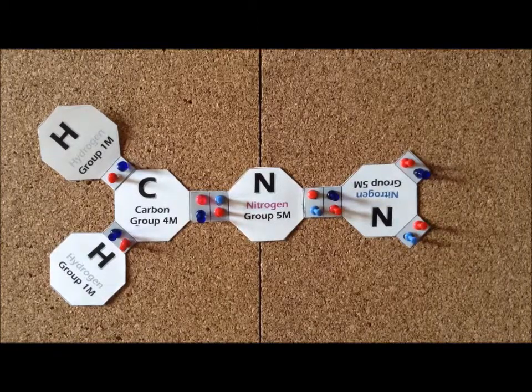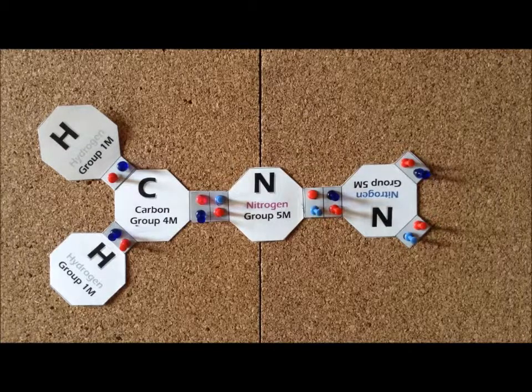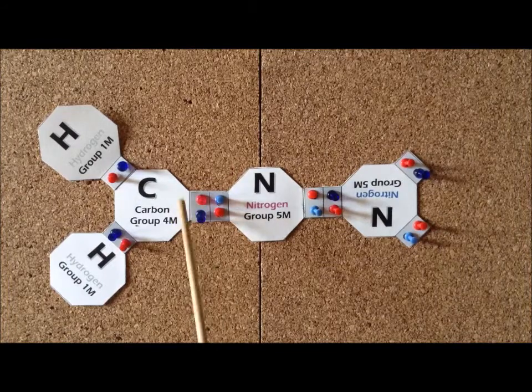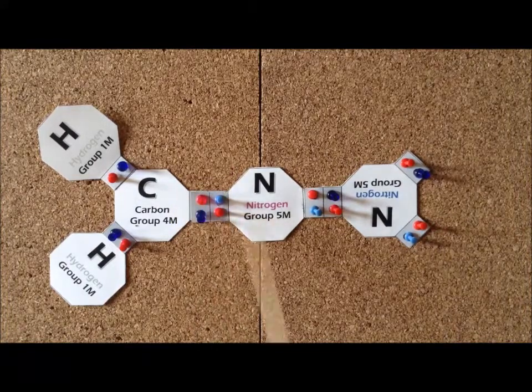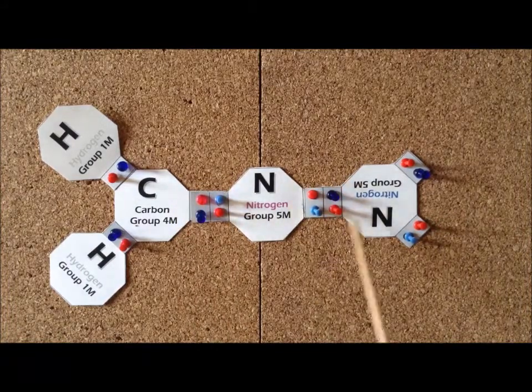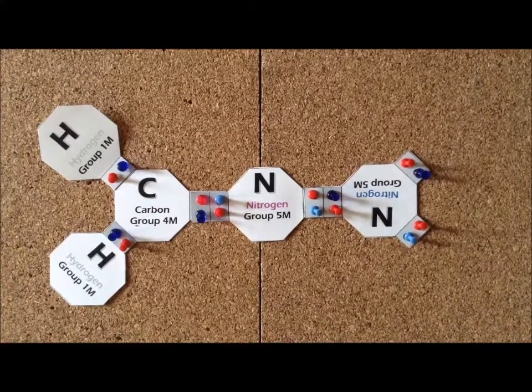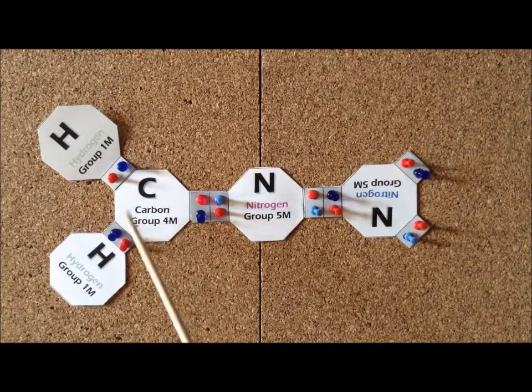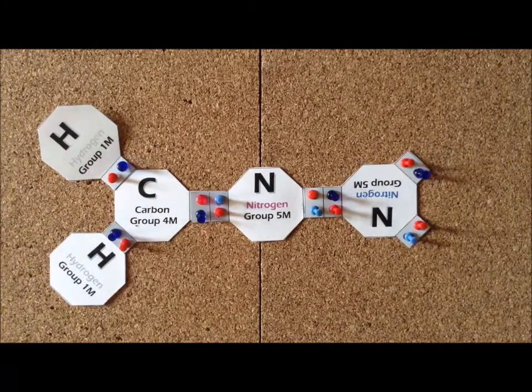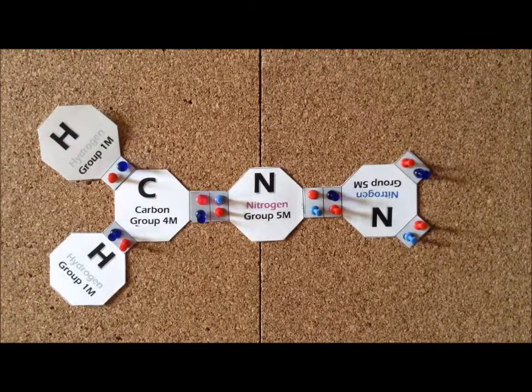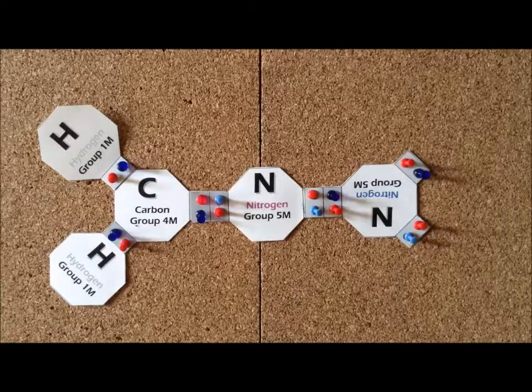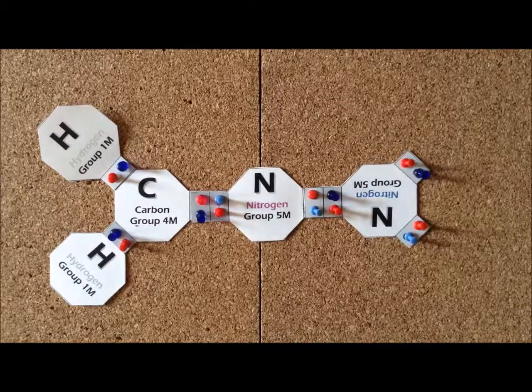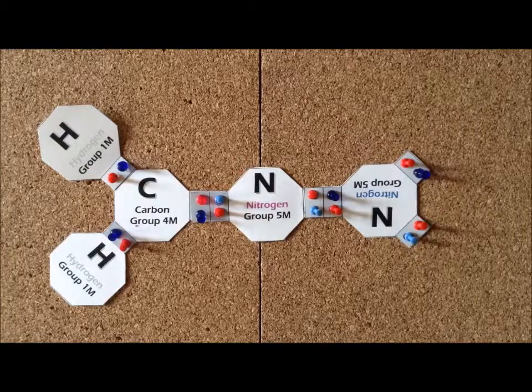We can also develop resonance structures for it, in which case we could replace this double bond by a single bond, this double bond by a triple bond. Those are somewhat less likely because in those cases we would end up with a lone pair on carbon, which is not impossible, but we're more likely to have lone pairs on the more electronegative elements, so we're more likely to have lone pairs on nitrogen or oxygen typically than on carbon.